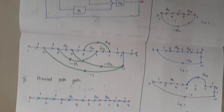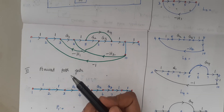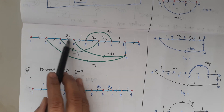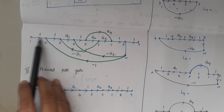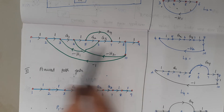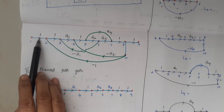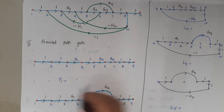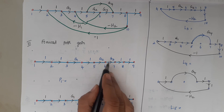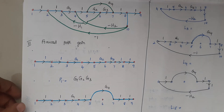The next step is to calculate the forward path gain. A forward path consists of arrowheads which move forward, starting from node 1 and ending at node 9. The first forward path passes through all nodes sequentially. Its gain is G1 into G2 into G3.